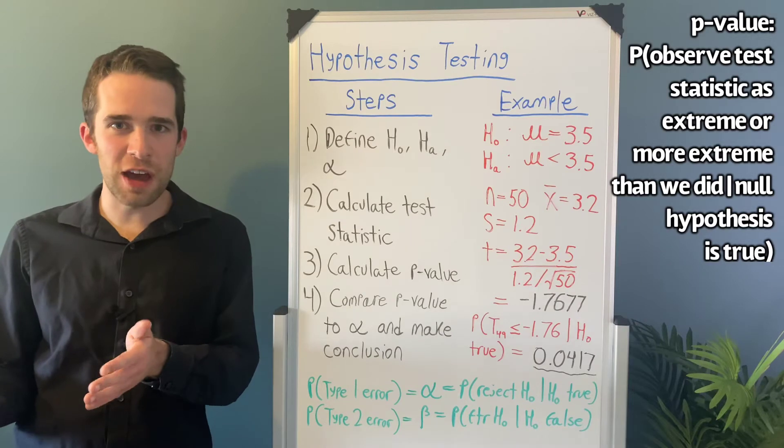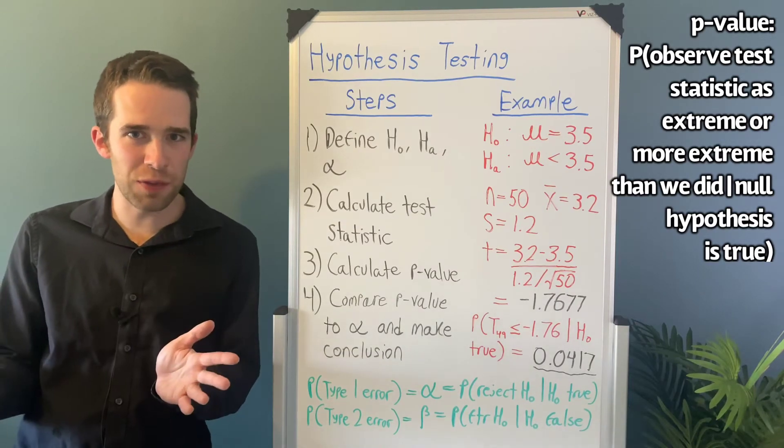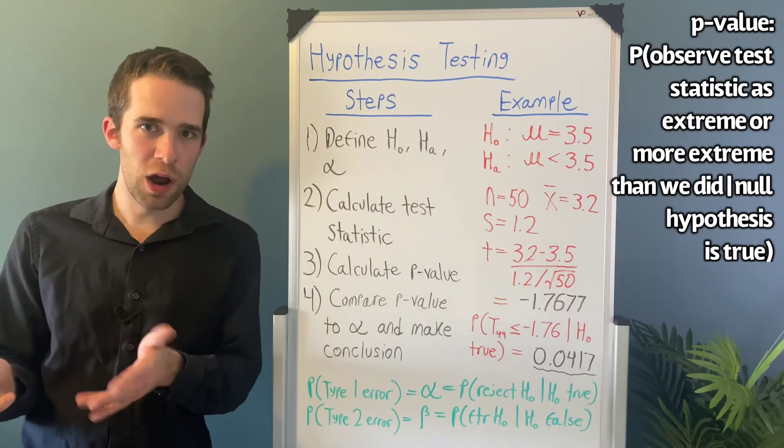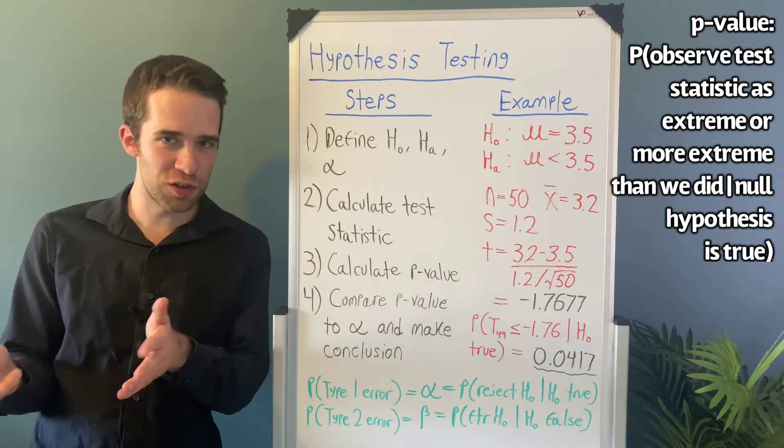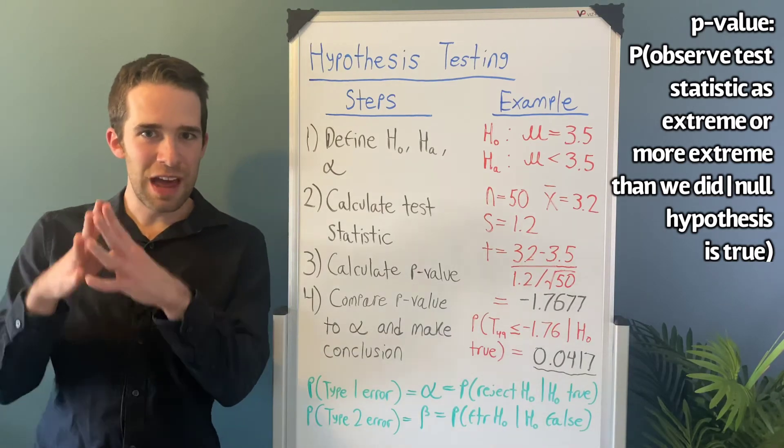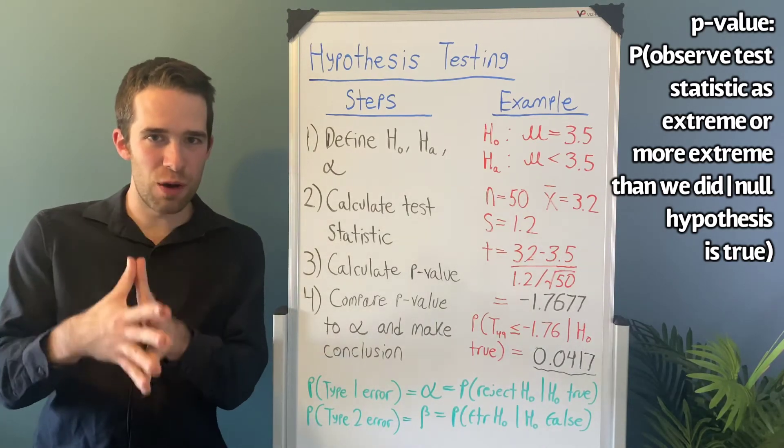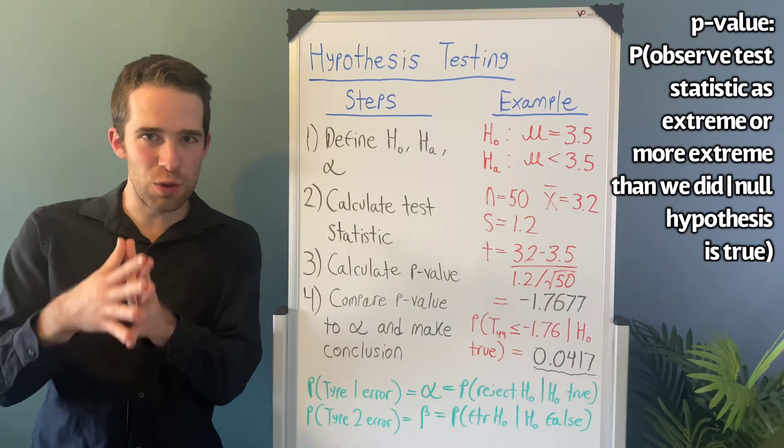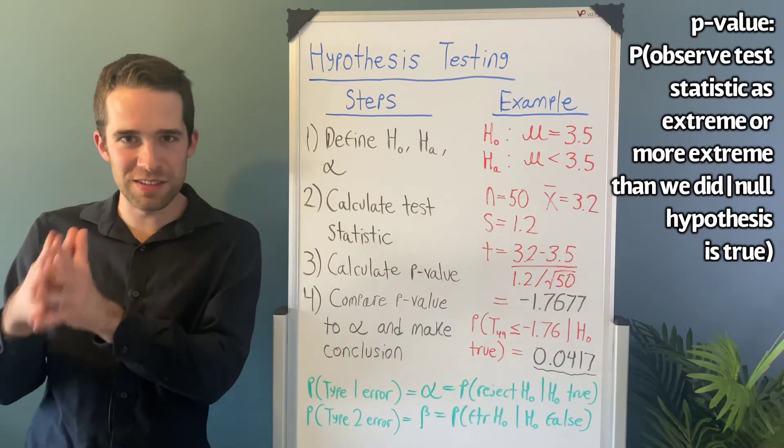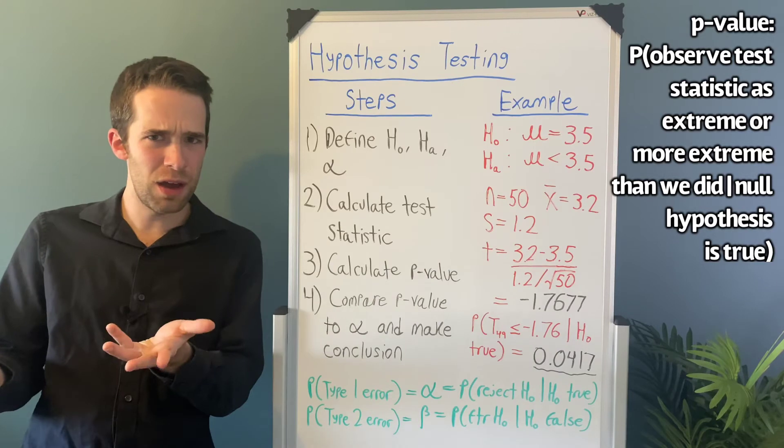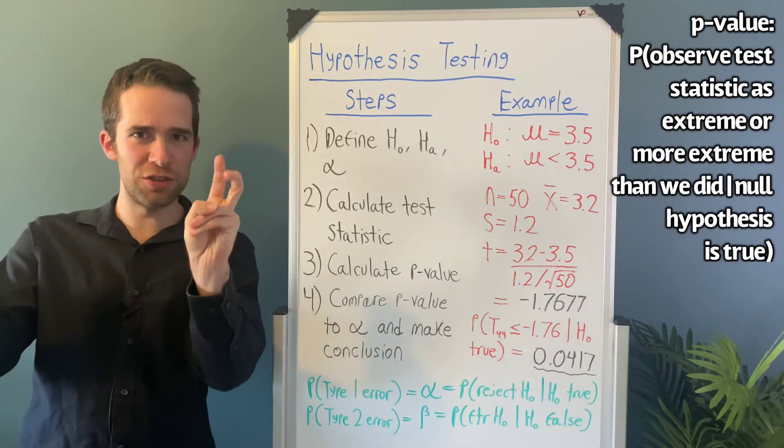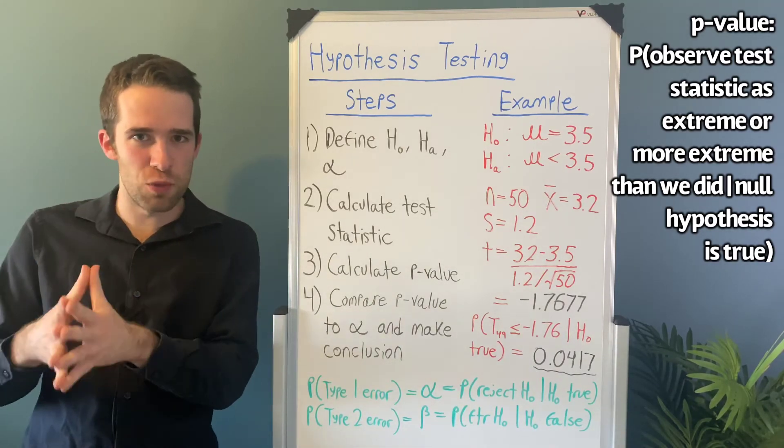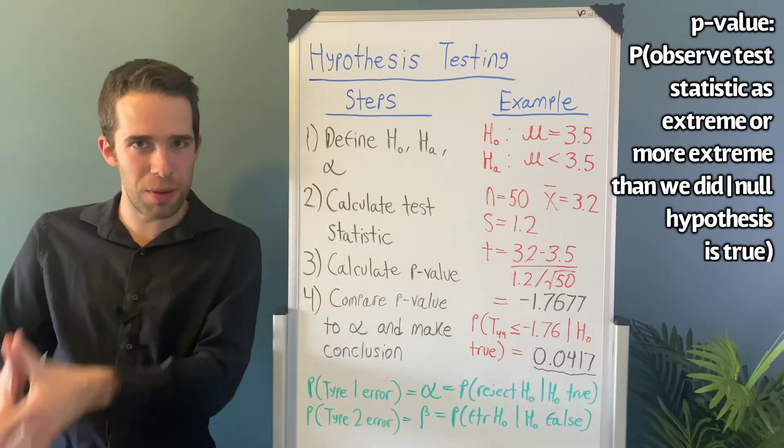For finding the p-value, you can use a t distribution table of which there's tons of them out there, or you can use R. I personally like using R, so that's what we're going to do here. And the p-value is going to be the area to the left of t equals negative 1.7677. Why? Because when we talk about more extreme, that means in the direction of the alternative hypothesis.